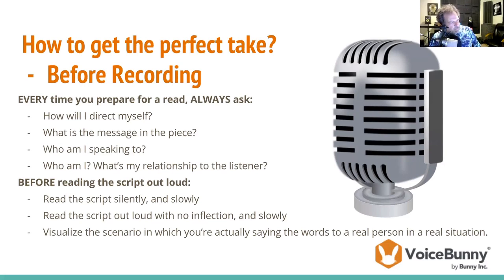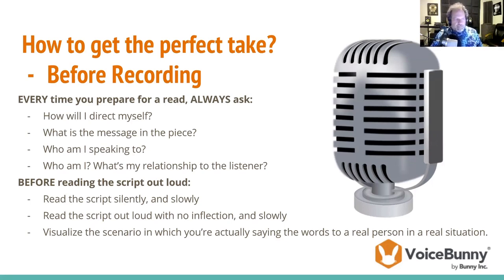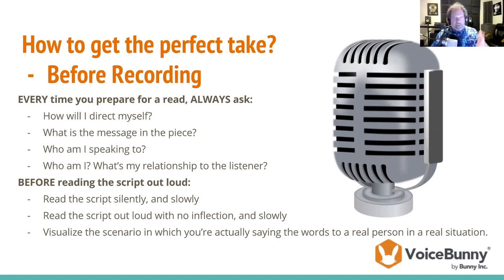Before reading the script out loud, read the script silently and slowly. Then the second step: read the script out loud with no inflection and slowly. We're still trying to answer those questions: who are we talking to, what is the message, what is my relationship to the listener? When you're reading the script out loud with no inflection and slowly, you're developing a bit of muscle memory when it comes to connecting with the script — just getting used to saying those words.